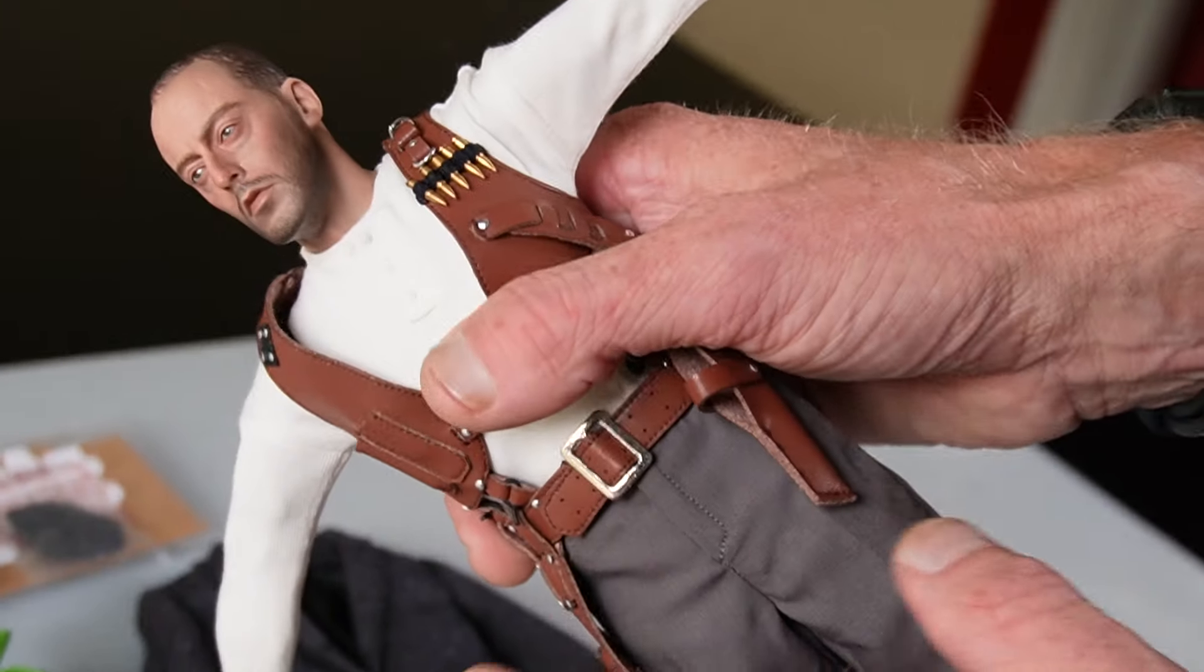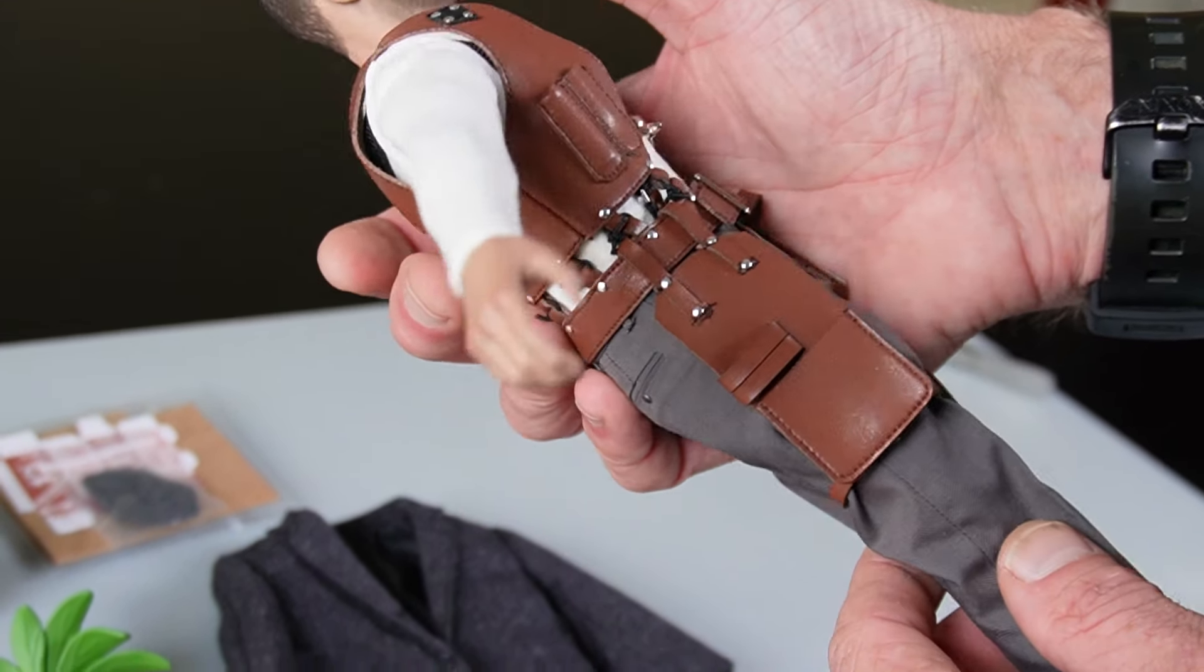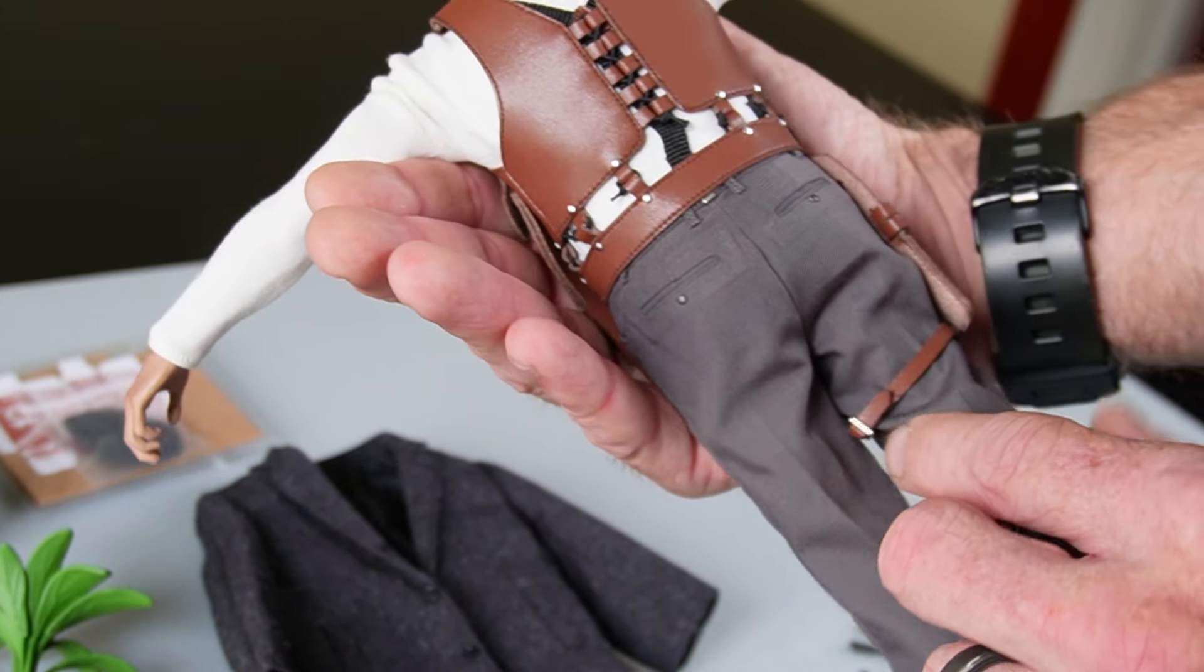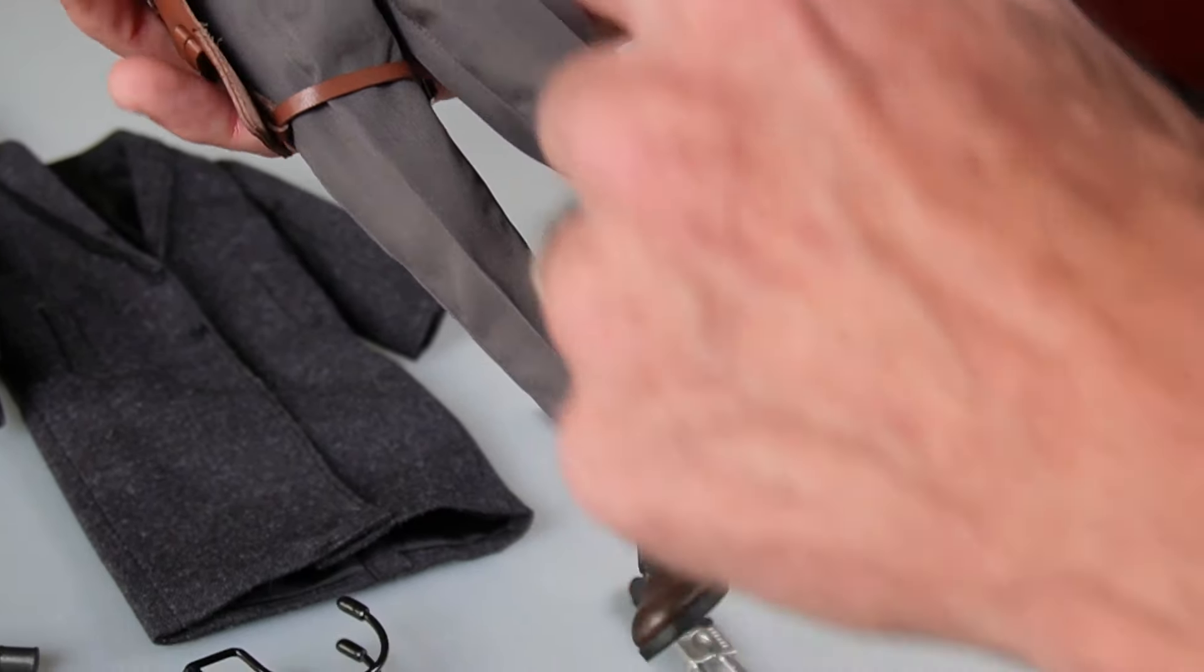Metal shells up here. You can see that holds a handgun. These are where the bolt cutters go. But super cool. Again, iconic vest. And I love the way he dressed in the movie.